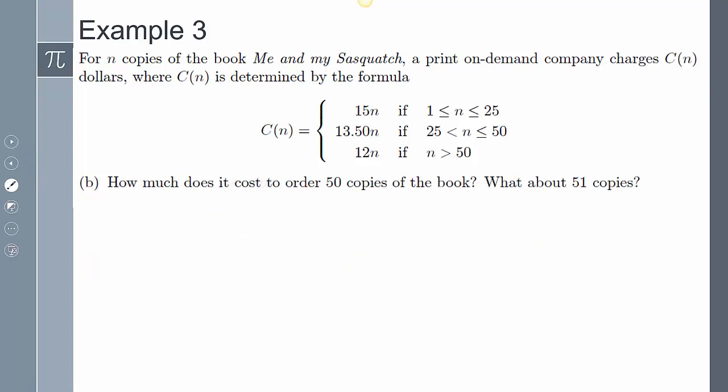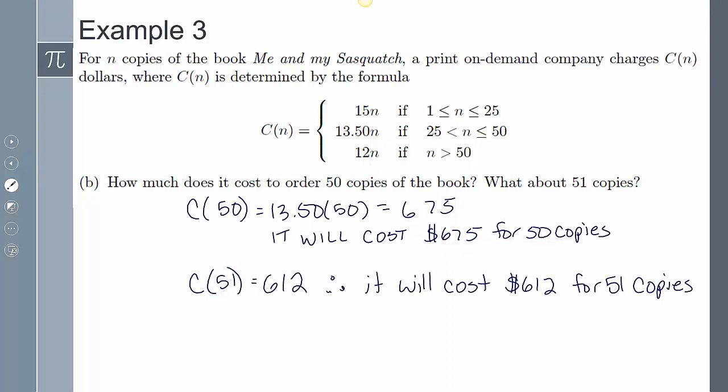Part B, it says how much does it cost to order 50 copies of the book? What about 51 copies? Well, if I order 50 copies of the book, then this is my domain, because n will be less than or equal to 50. And if I order 51 copies, well, 51 is greater than 50. So that's going to be this function here. So C(50) equals 13.5 times 50. That's going to be $675 for 50 copies. And then if I do the 51 copies, this is going to be $612. And therefore, it's going to be $612 for 51 copies. Interesting. It's cheaper. If I just bought one more copy, it's going to be cheaper than if I bought 50. That's pretty interesting.